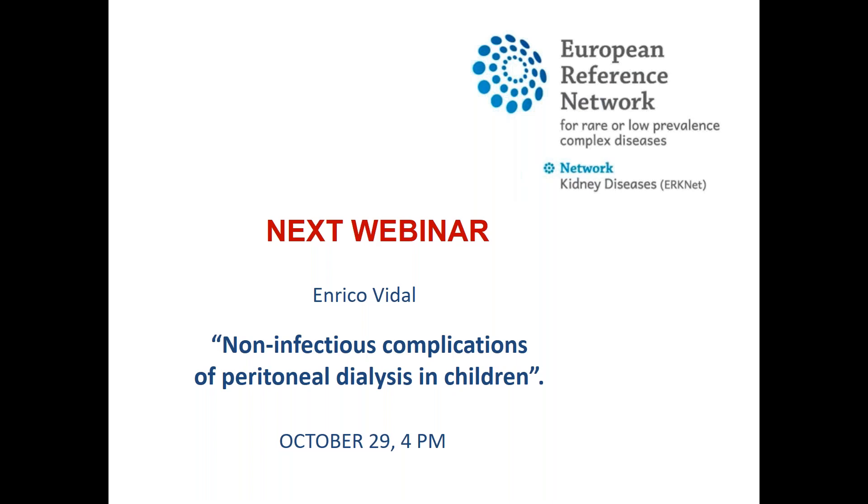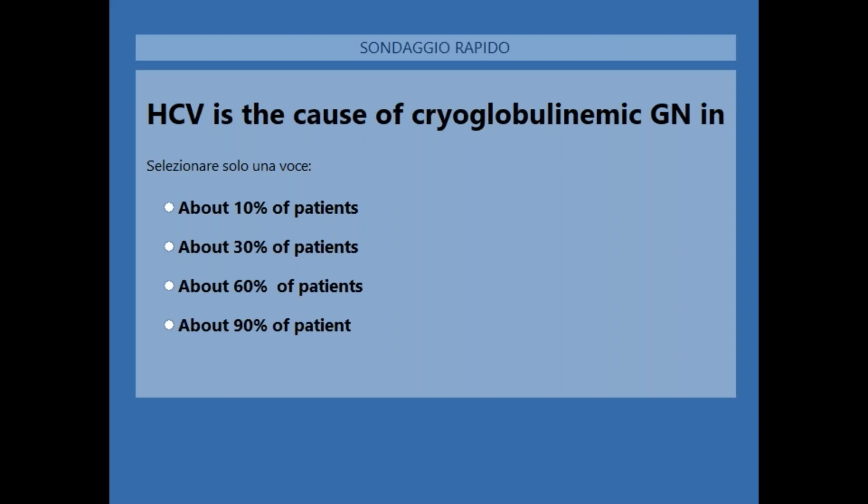Thank you so much, Dario. We will now start the polls. The first question for the audience: HCV is the cause of cryoglobulinemic glomerulonephritis in about 10%, 30%, 60%, or 90% of patients?